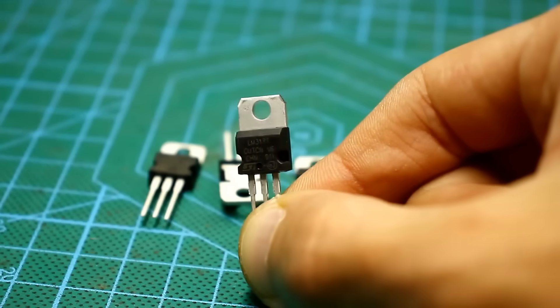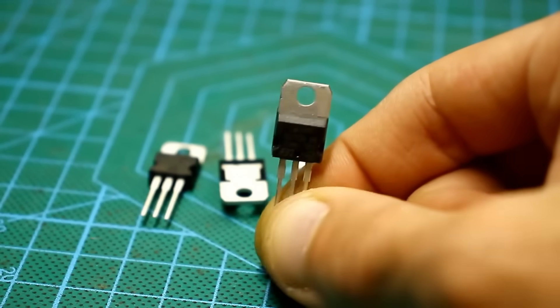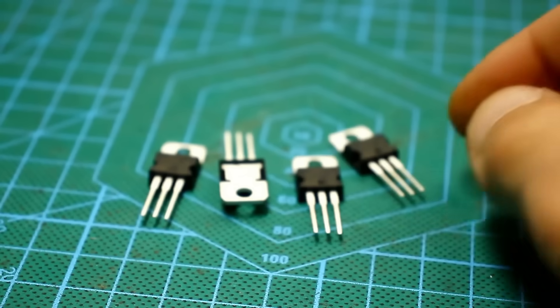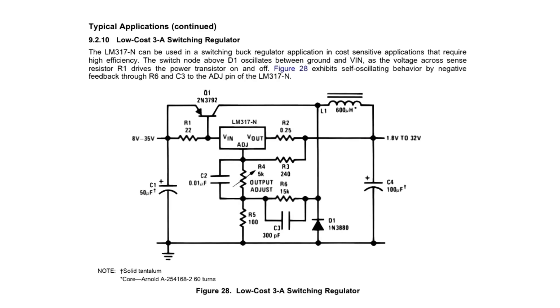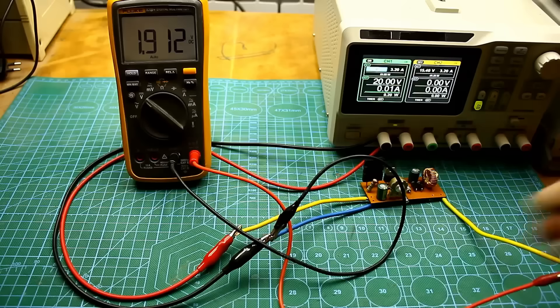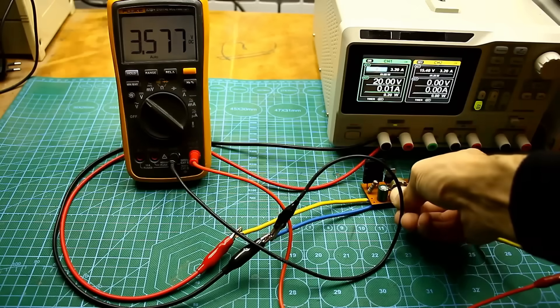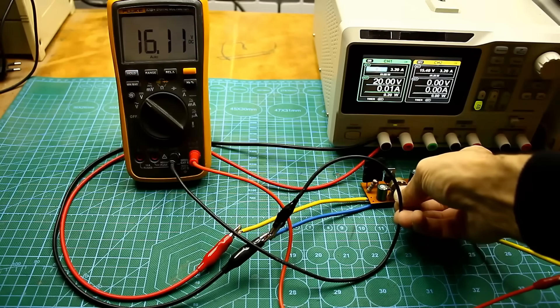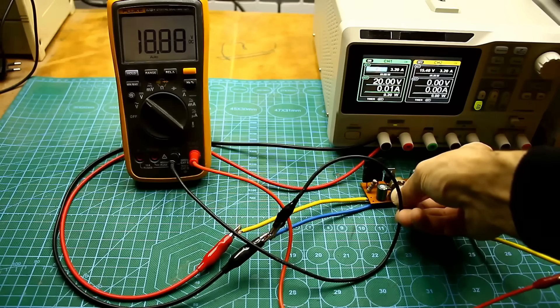As mentioned earlier, the LM317 microchip operates in linear mode, which means heating and low efficiency. But, in datasheets, there is a schematic of a switching step-down regulator where the microchip functions as a pulse generator, and an additional power element in the form of a bipolar transistor is added to the circuit. This circuit has high efficiency due to pulse conversion. The function of adjusting the output voltage is retained, and the output current reaches up to 3A.